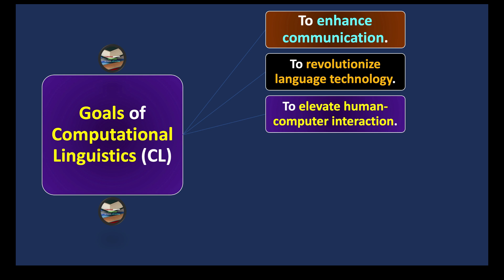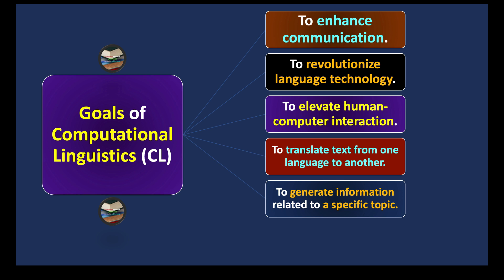To translate text from one language to another. Computational linguistics started in the very beginning with the intention of translating text from one language to another. And to generate information related to a specific topic—you type in the search box and get specific information.